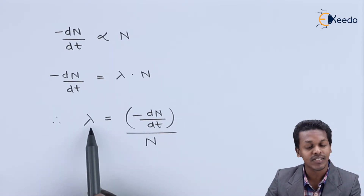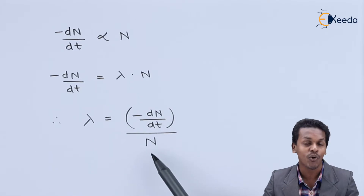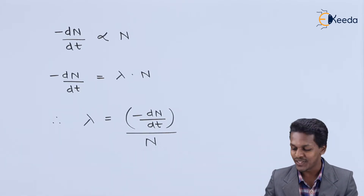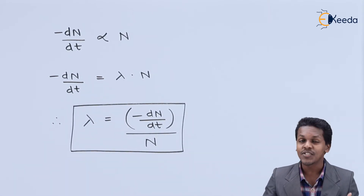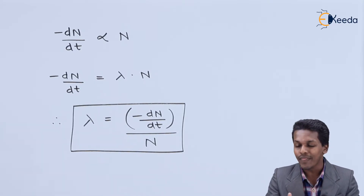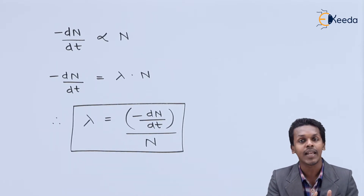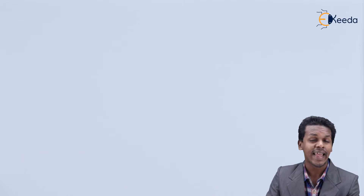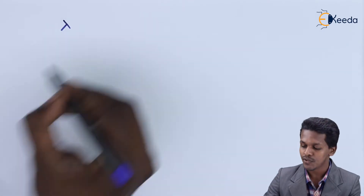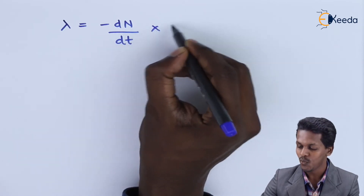We can also say that the decay constant is the ratio of the amount which has disintegrated per unit time to the amount of the substance present initially. This is what we have got to know about the decay constant. Now, based on this, we are going to derive a particular equation. So, lambda equals minus dn/dt multiplied by 1/n.